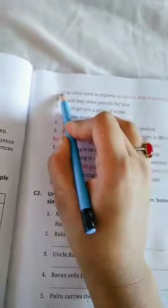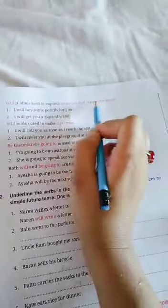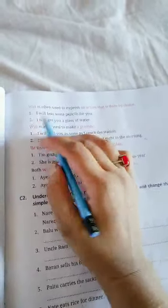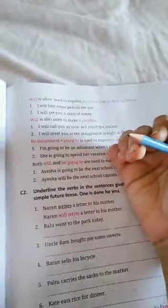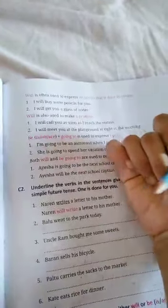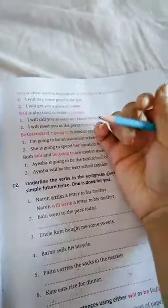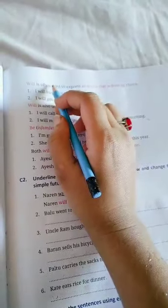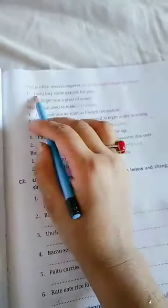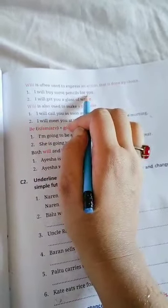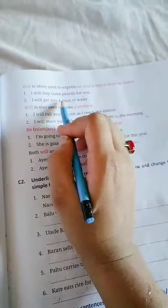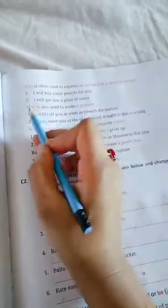Will is often used to express an action that is done by choice. Will is used when we do an action by our own choice - by our own action, by our own choice. We do any action, in that case we use will. Like: I will buy some pencils for you. This was my choice. I will get you a glass of water. This is my choice.